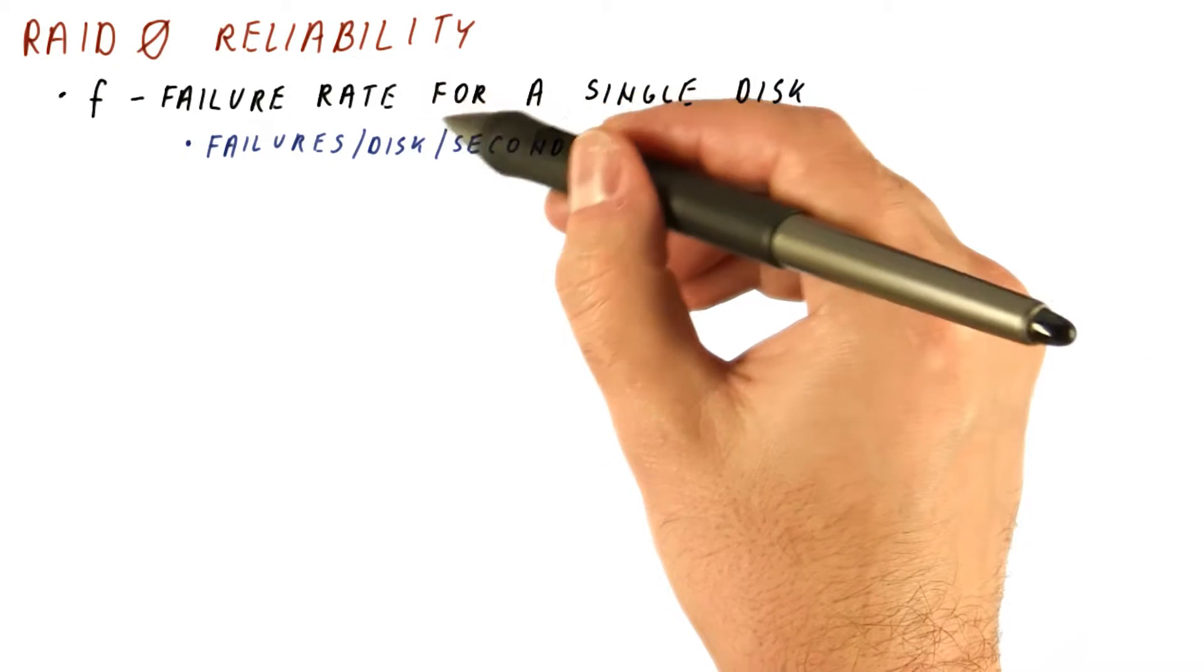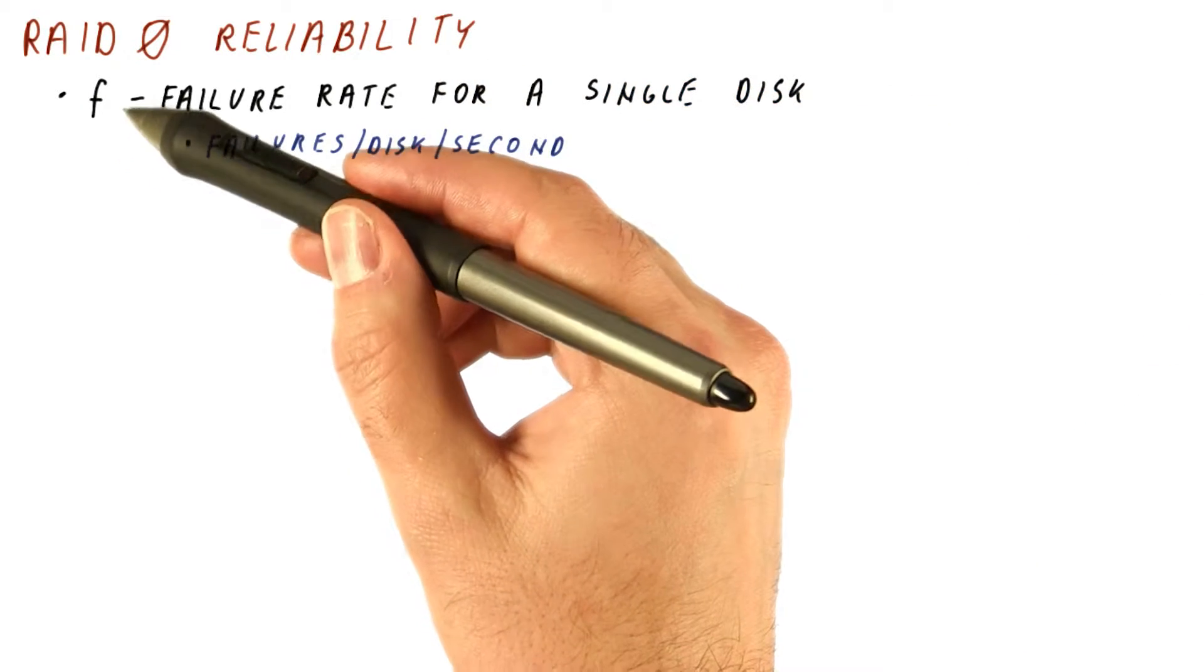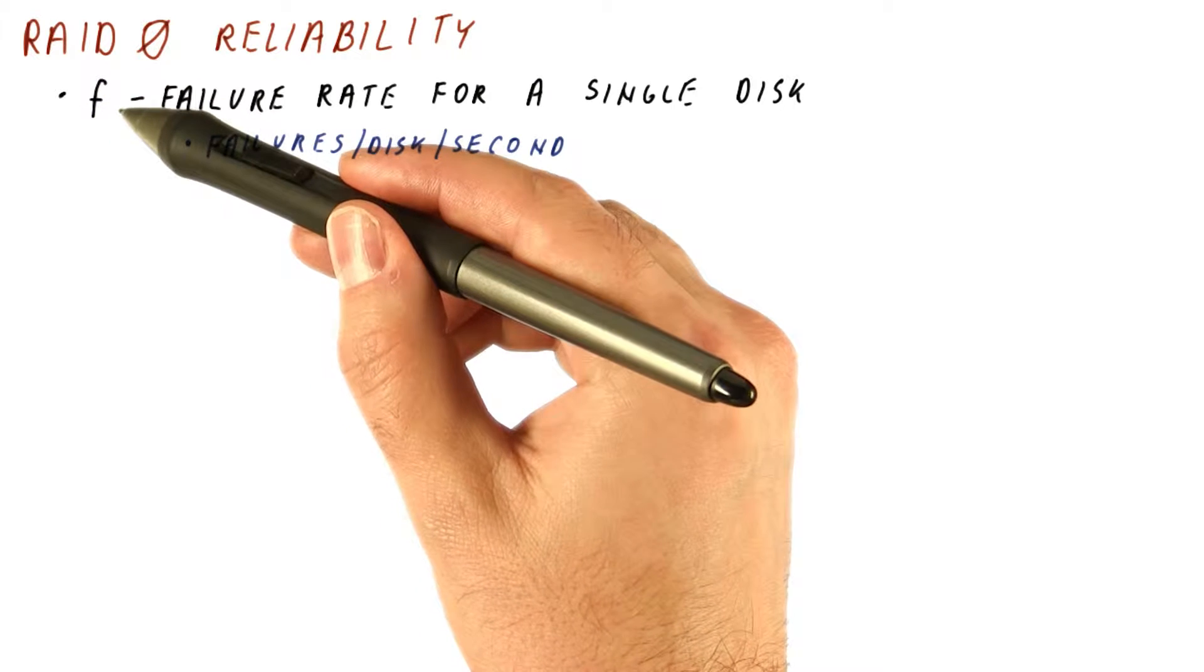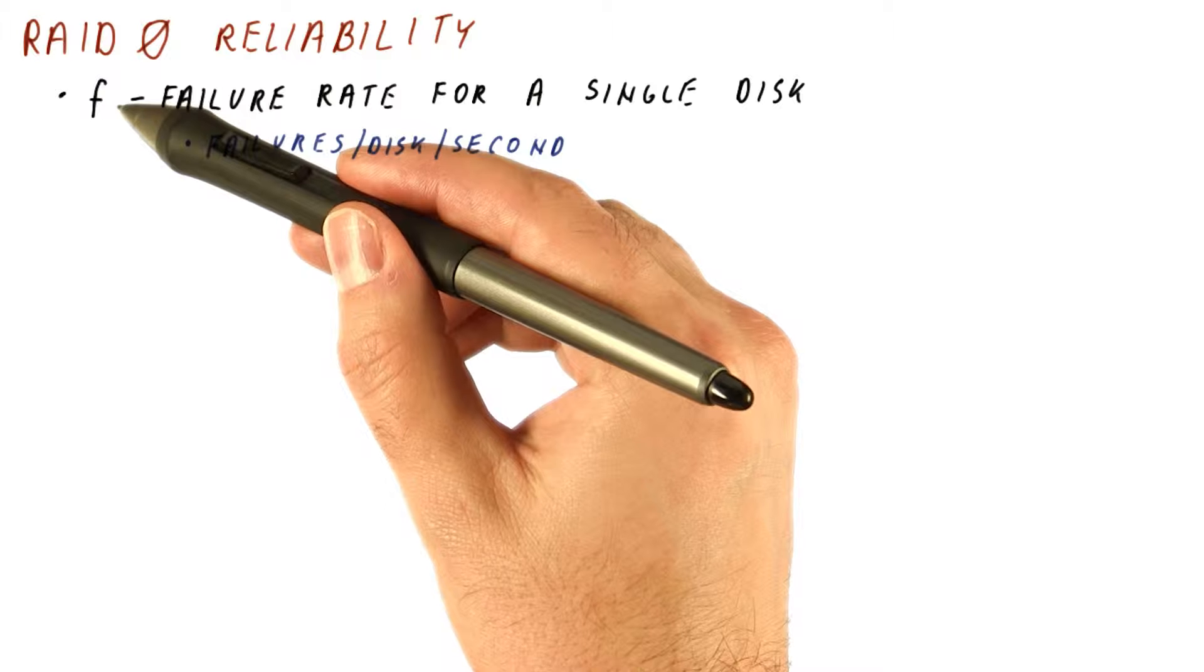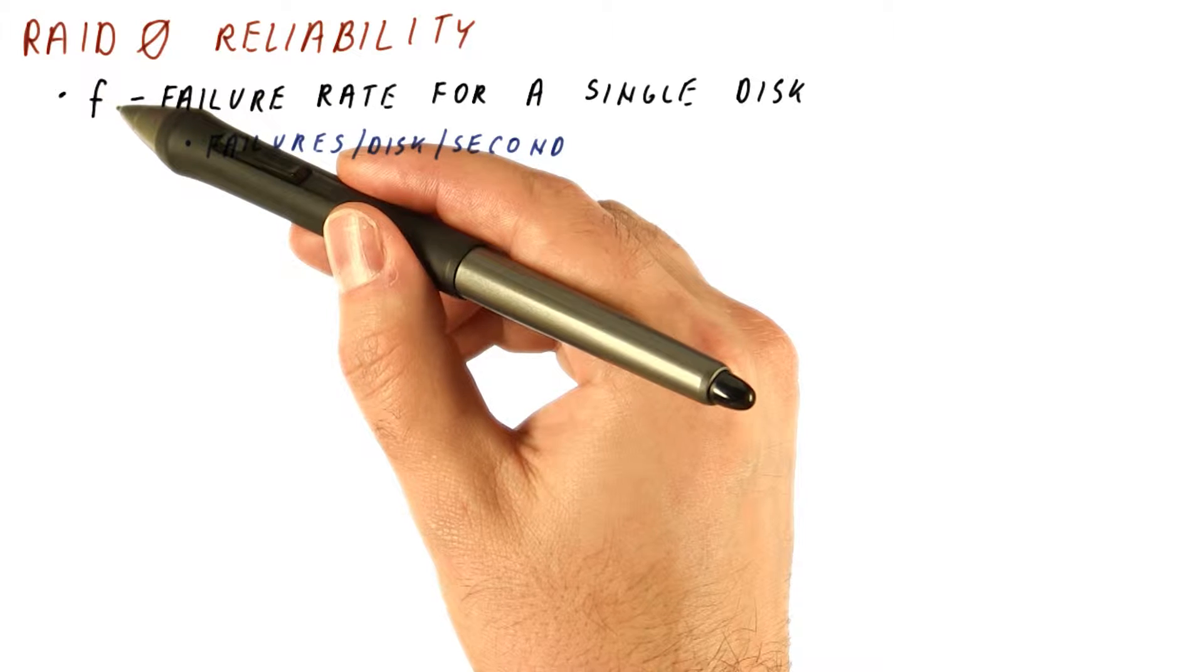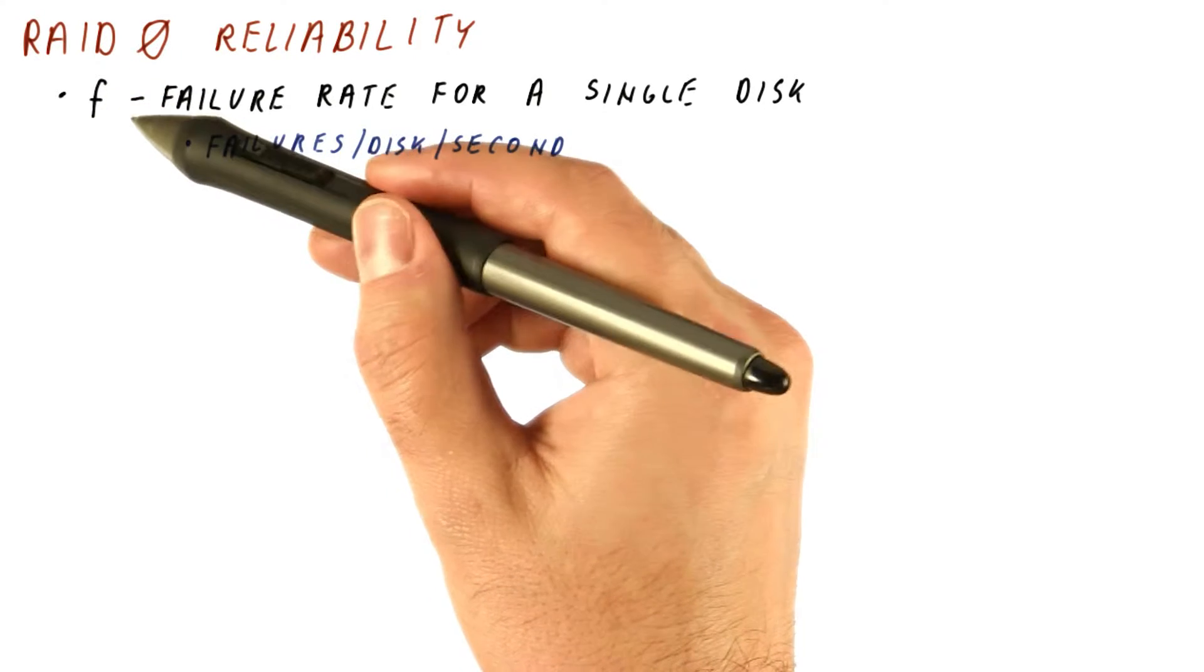Obviously, this number will be extremely small. Usually, we can assume that the failure rate is constant over time. That is, every second, if the disk is working at the beginning of the second, it has the same failure rate during that second.